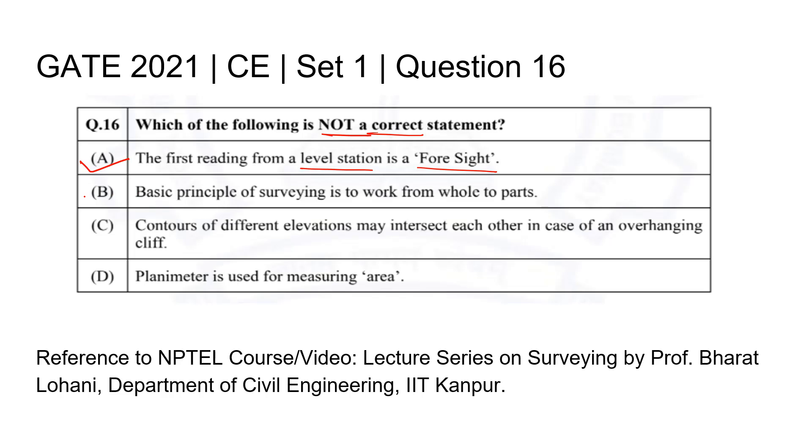Option B: Basic principle of surveying is to work from whole to parts. Option C: Contours of different elevations may intersect each other in case of an overhanging cliff. Option D: Planimeter is used for measuring area.